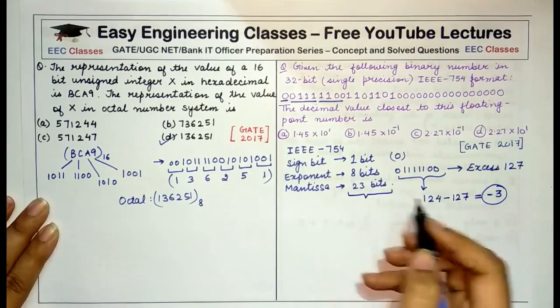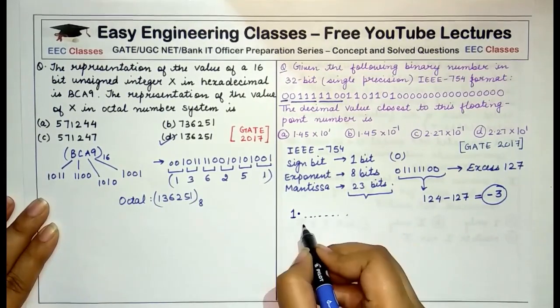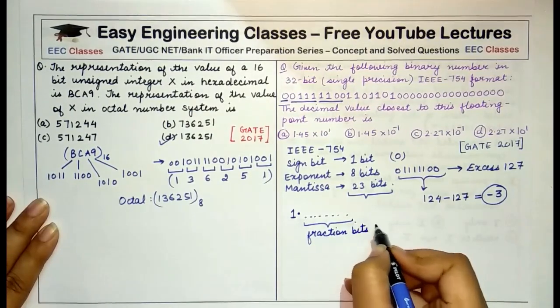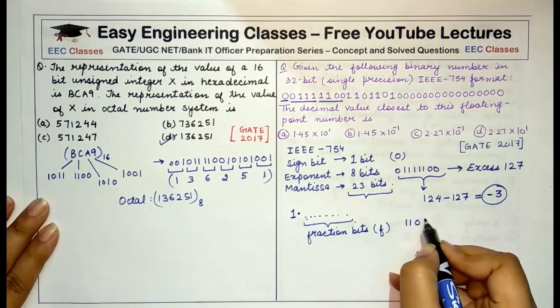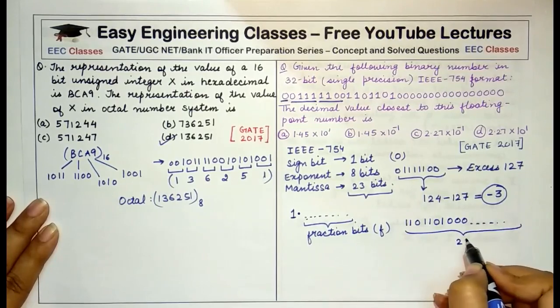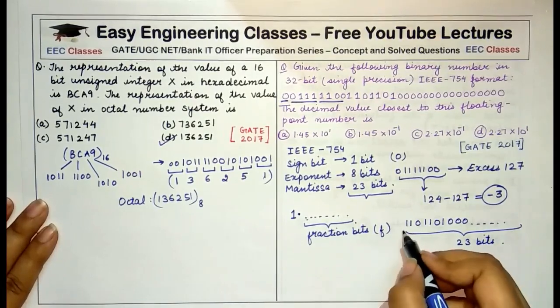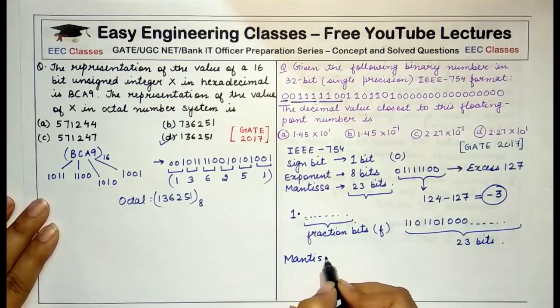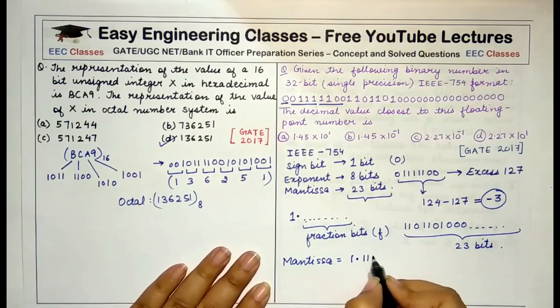Now coming to the mantissa. Mantissa is generally represented as one point followed by certain fractional bits. These are represented as fraction bits. In this case these bits are 11011010 followed by remaining zeros which make it a total of 23 bits. But if we write it down in implicit normalization form, that means if we only consider the non-zero initial part, then the mantissa can be expressed as 1.1110110 1.